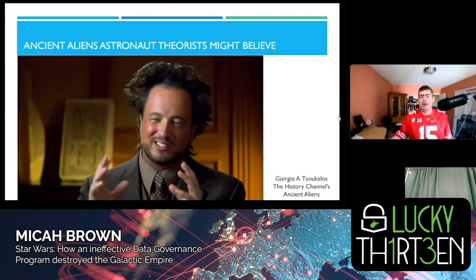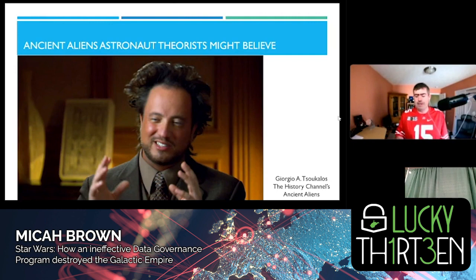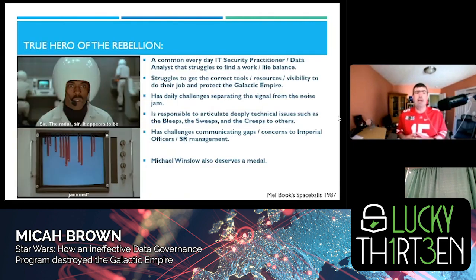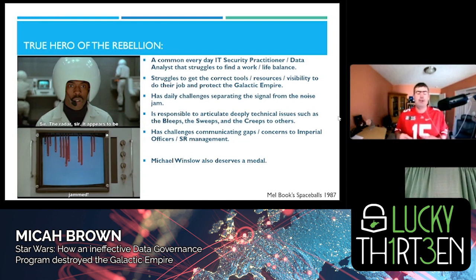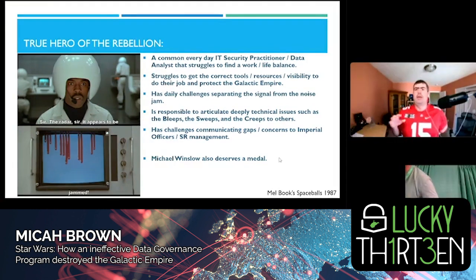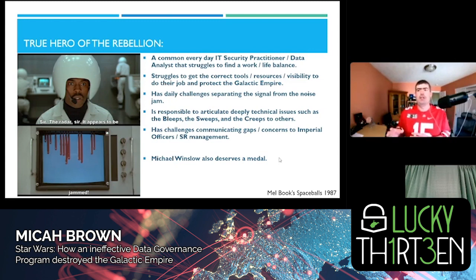So who was the secret rebel hero that allowed the Death Star plans to be stolen? I'd assert it'd be someone like a common everyday IT security practitioner or data analyst who struggles to find a work-life balance. This person probably struggles to get the correct tools, resources, and visibility to protect the empire. They face challenges separating signal from noise, articulating deeply technical issues — the bleeps, the sweeps, and the creeps — to others, and communicating gaps to senior management.